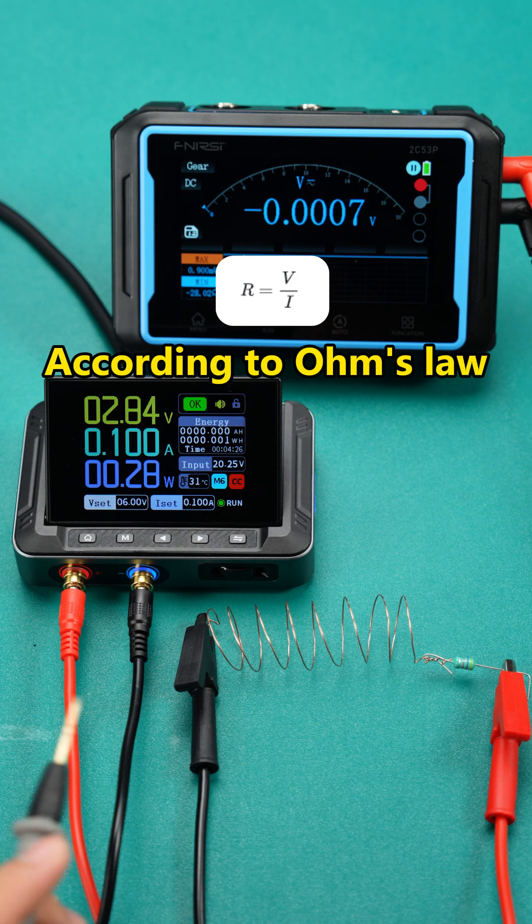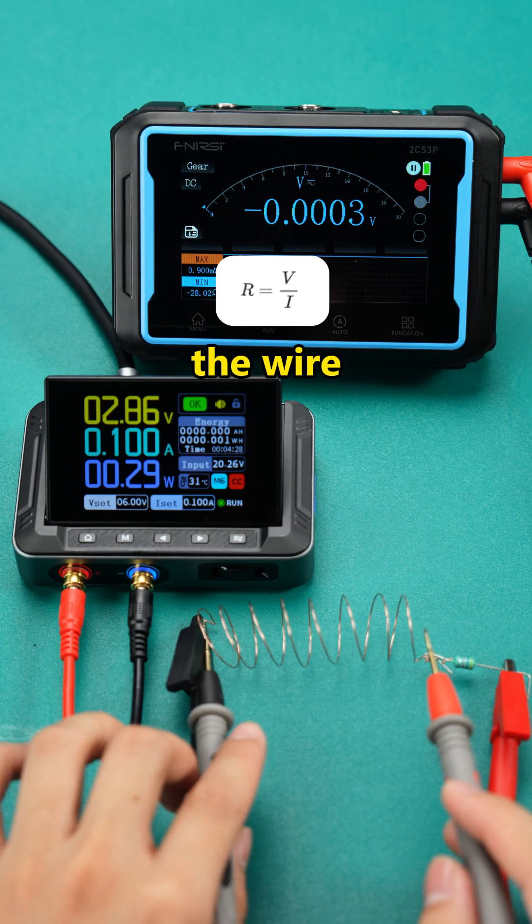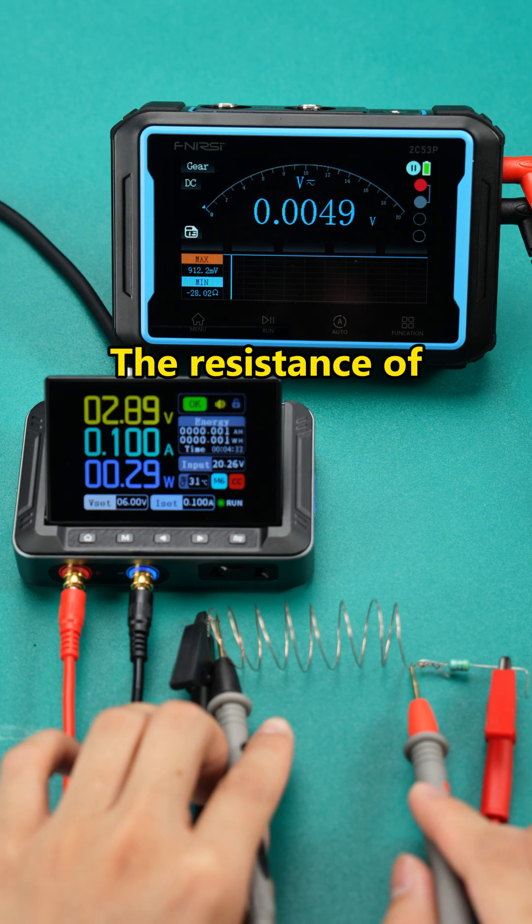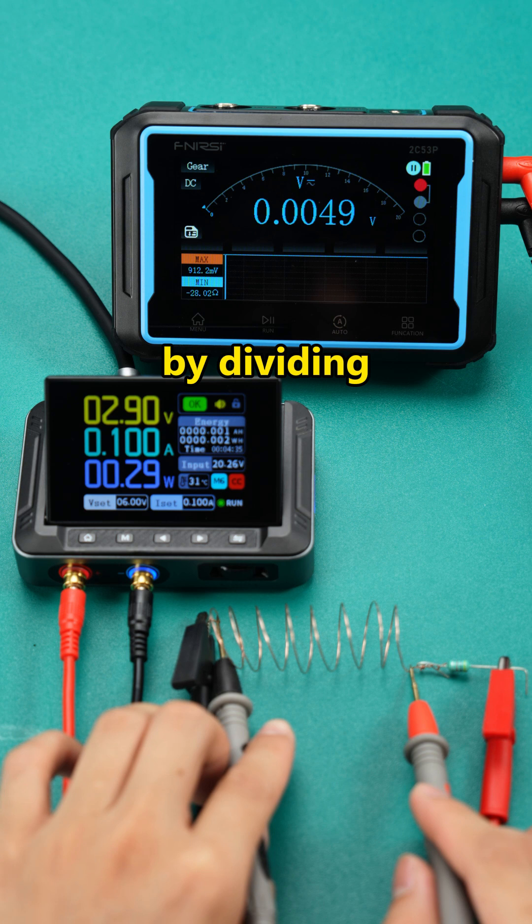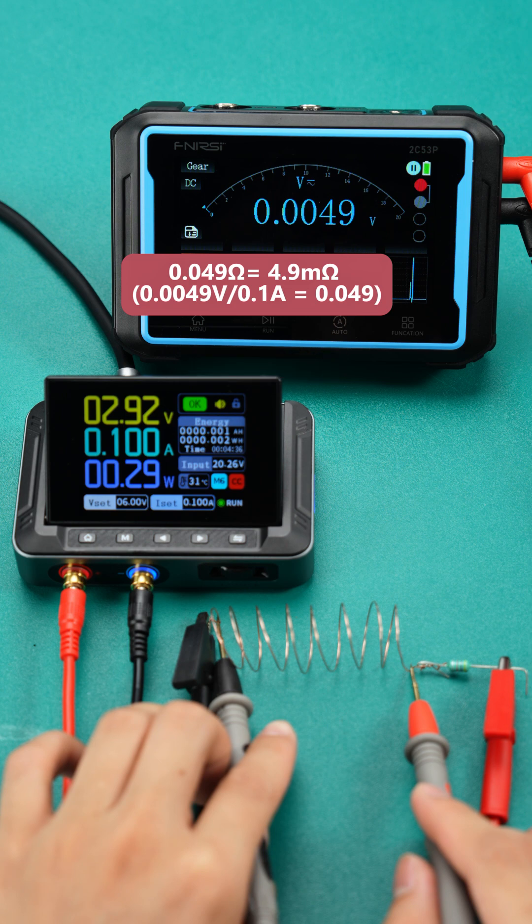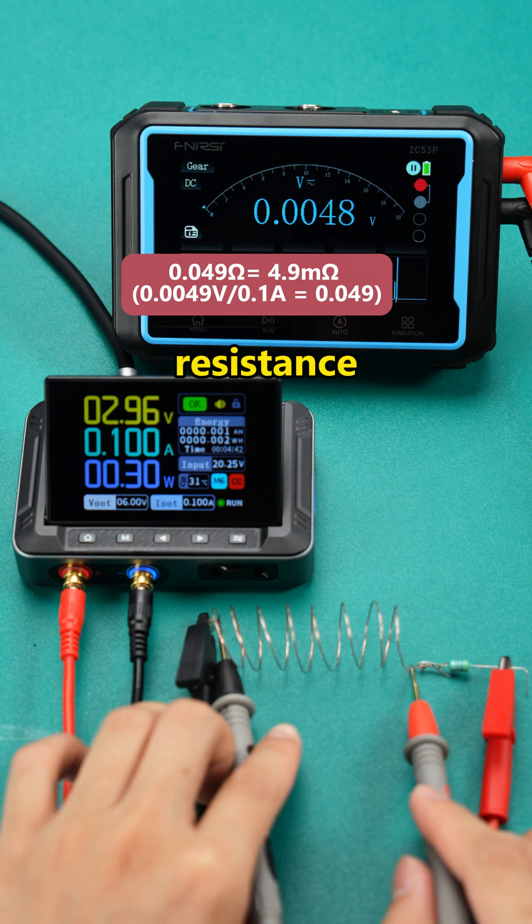According to Ohm's law, we can measure the voltage across the wire. According to the 0.1 A current output by the instrument, the resistance of the wire can be obtained by dividing the voltage by the current. The voltage here is 0.0049 volts. So, the calculated resistance is 0.049 Ohms.